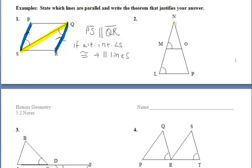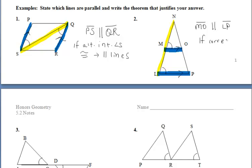Let's take a look at the second example. Once again, we're going to highlight the transversal — the line that forms the side of both angles — in yellow. Then, in a different color, we highlight the other rays that form the sides of the given angles. From that, we can say that MO is parallel to LP. These are corresponding angles, and since those corresponding angles are congruent, that means those two lines are parallel.